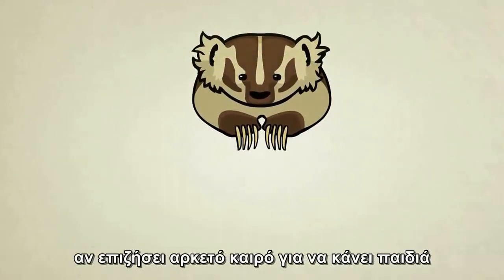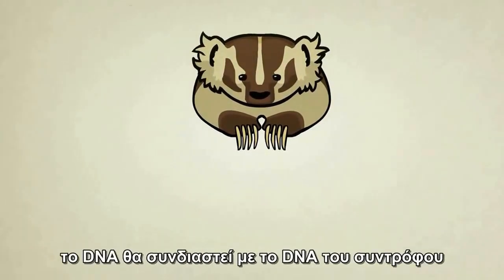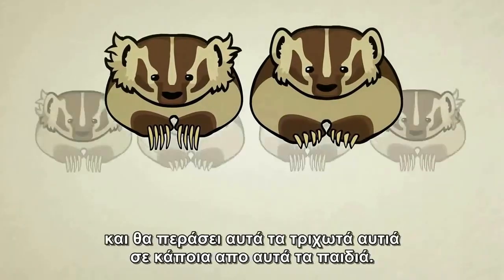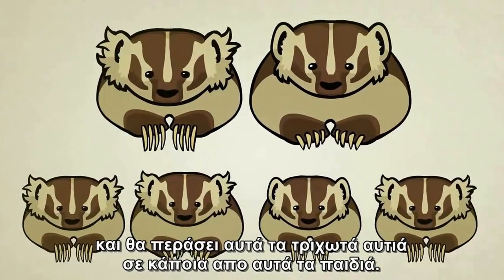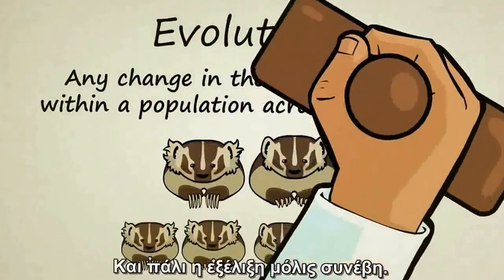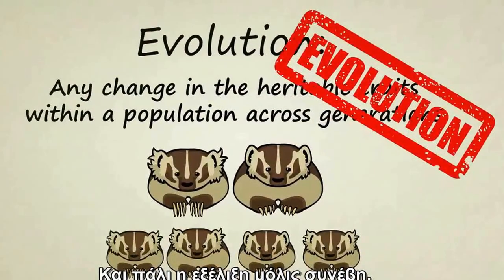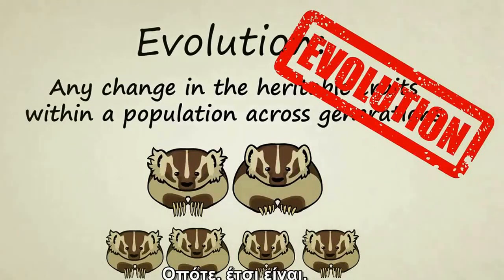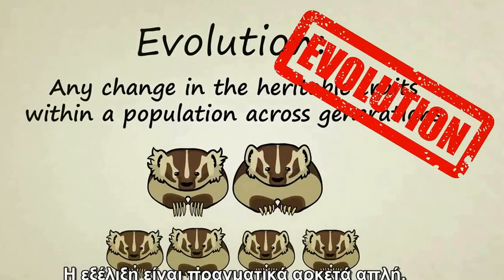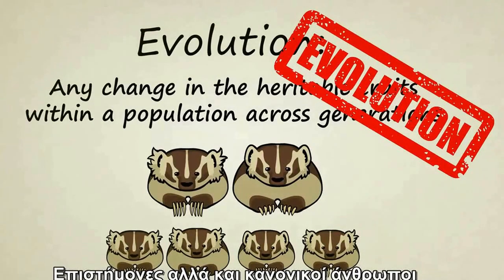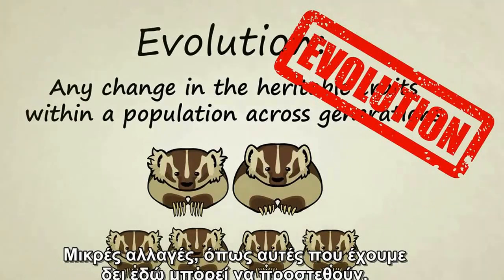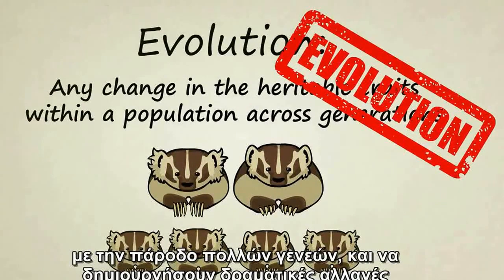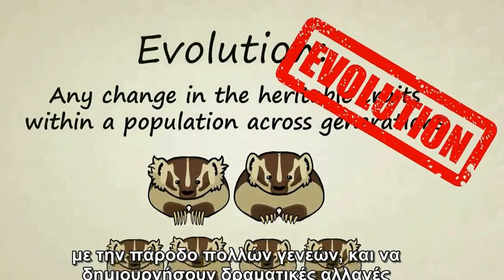If she survives long enough to have kids, her DNA will combine with the DNA of her partner and she'll pass on those extra hairy ears to at least some of her children. Evolution has officially occurred. Scientists and everyday people everywhere witness evolution happening all the time. Small changes like the ones we've seen here can add up over multiple generations to create dramatic changes.